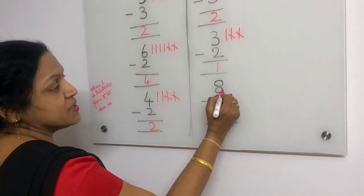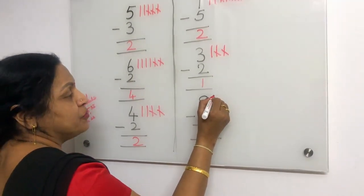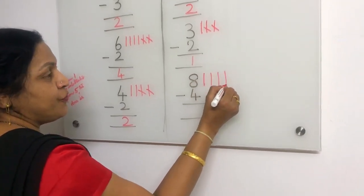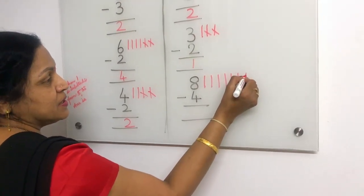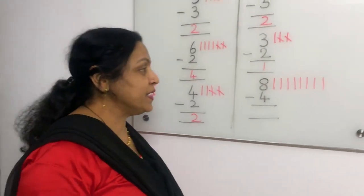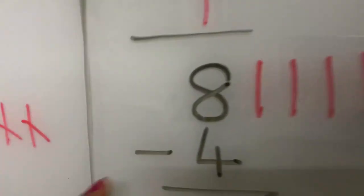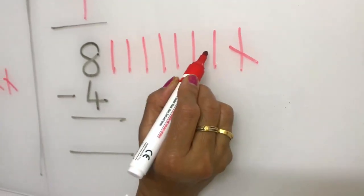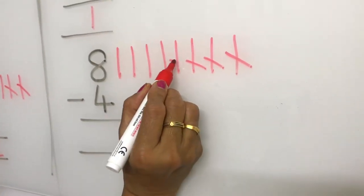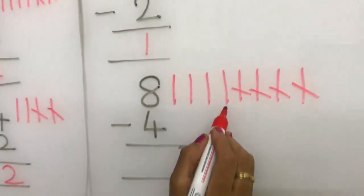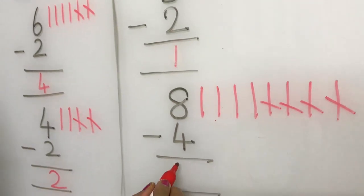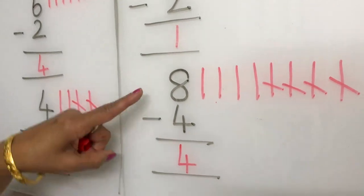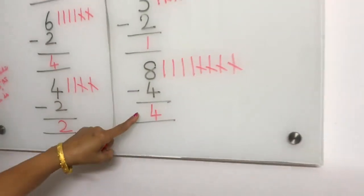Okay. What is this number? Eight. We put eight lines: one, two, three, four, five, six, seven, eight. How many lines do we take away from eight? Four. We take away four lines — one, two, three, four. How many remaining? One, two, three, four — four is the answer. When four is subtracted from eight, the answer is four. Did you understand?